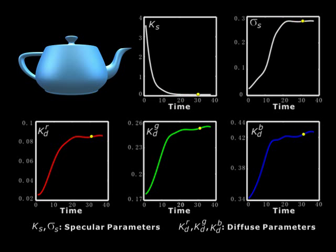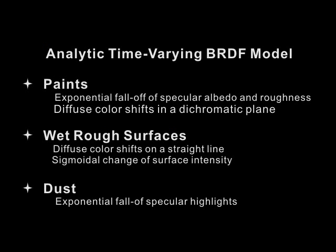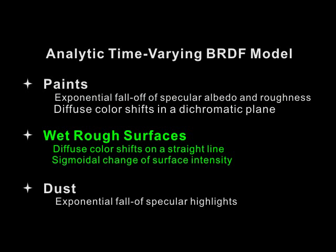The trends of these time-varying parameters can be modeled by our analytic TV BRDF models. For paints, the specular albedos and roughness vary at exponential rates. Diffuse colors of drying paints shift within a dichromatic plane in the color space, spanned by the paint color and the surface color. In the case of wet surfaces, the diffuse color shift can be modeled as a straight line in the color space. Furthermore, their surface albedos brighten according to a sigmoidal function. For dust, the specular highlights fall off exponentially and die out in the very early stage of dust accumulation.